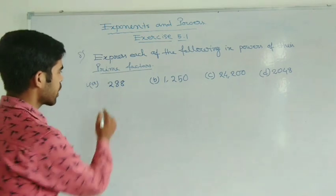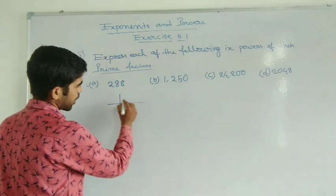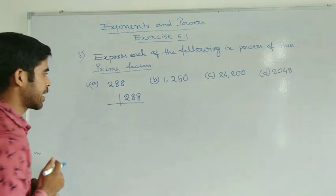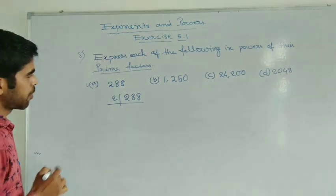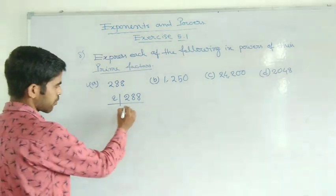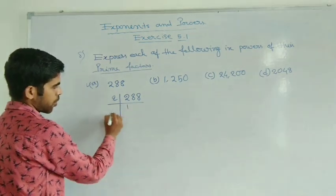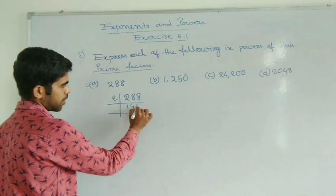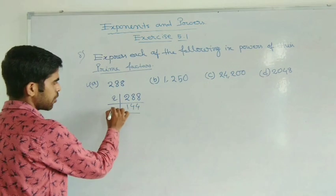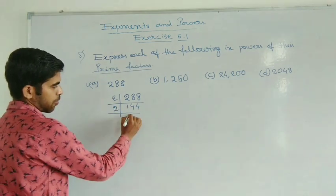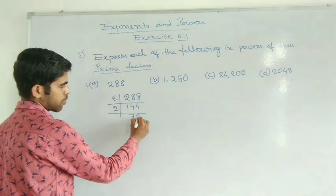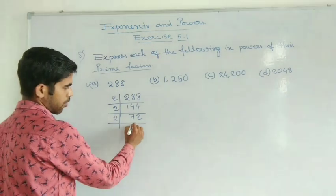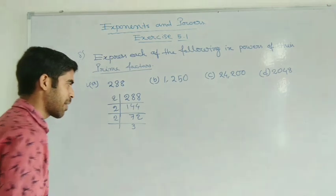We will express this one in prime factorization. First you convert this to prime factors. So if I write 288, you divide this by 2. So prime number 2 is the prime number. First you divide it. Then this will be 2 to the power 8. Again you divide this by 2. Now there is 7 and a remainder of 2. Again you can divide by 2. There will be 3 because 2 times 3 is 6, and there is 7.